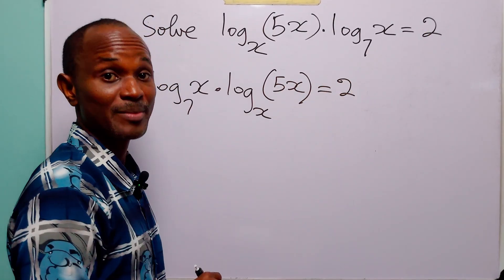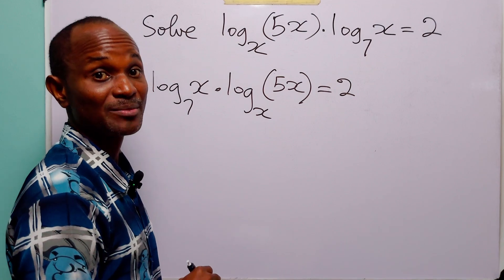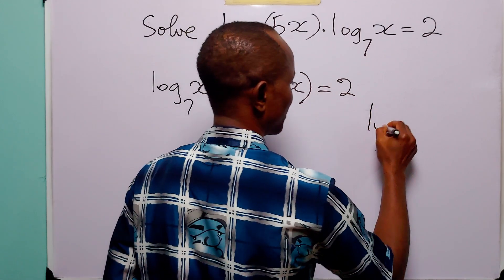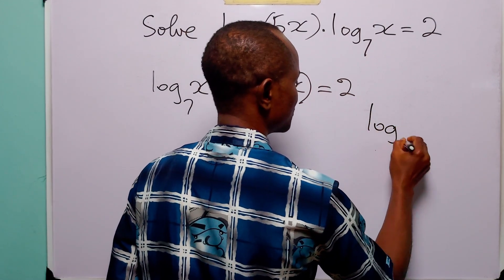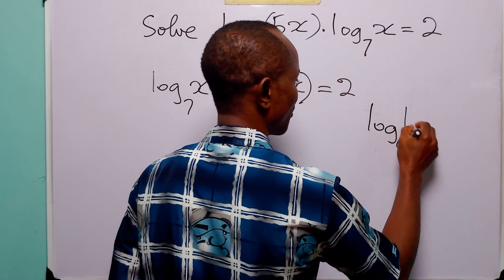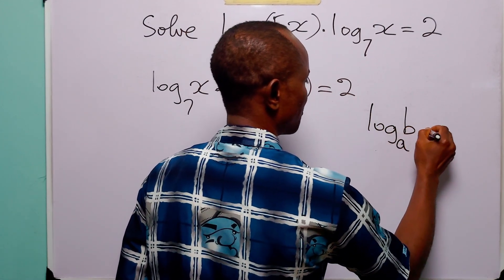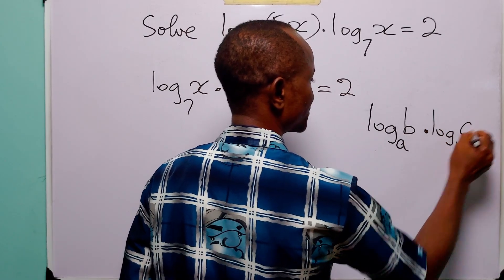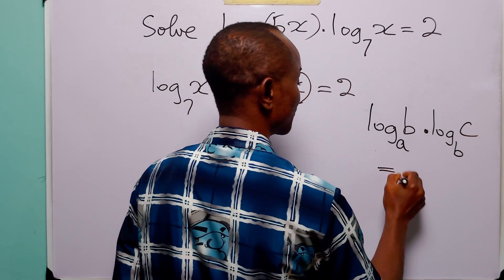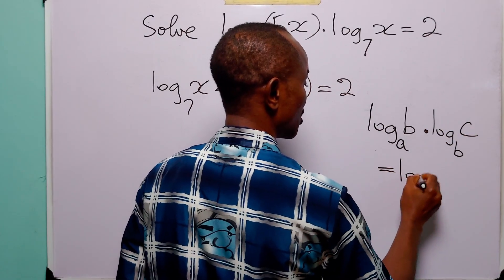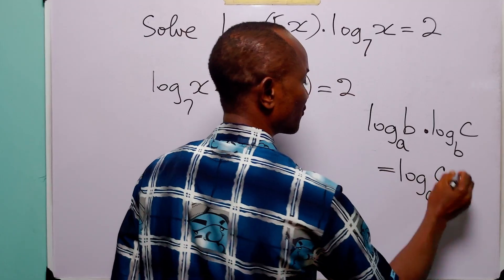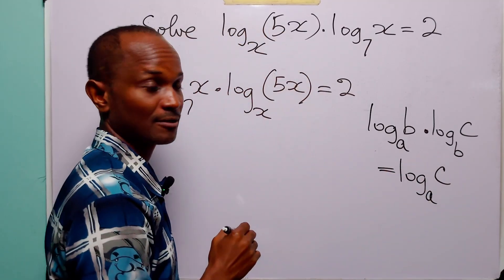Now let us remember the logarithmic identity: log base a of b, multiplied by log base b of c, is equal to log base a of c.